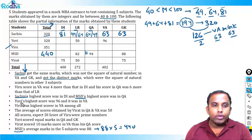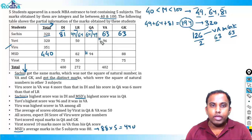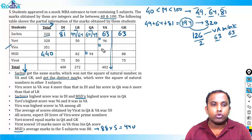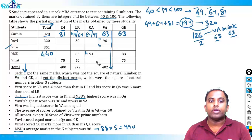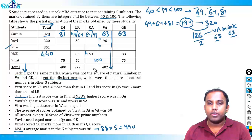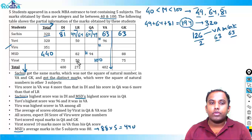UV's highest score was 96 and it was in VA. Viru was the highest scorer in VA among all students. The average of Virat's scores in QA and VA is 50, meaning their sum is 100. Virat's total score works out to 300: 75 + 50 + 150 + 125 + 100... we get a total of 300 for Virat.